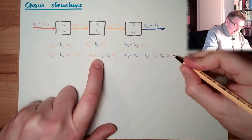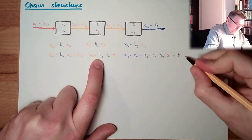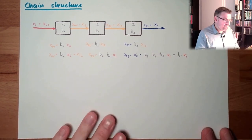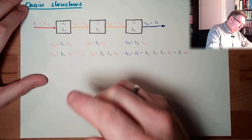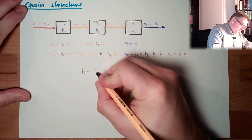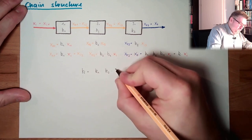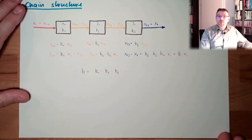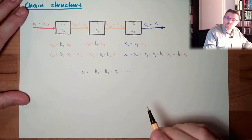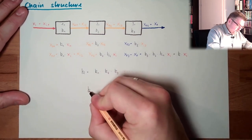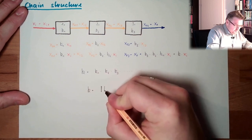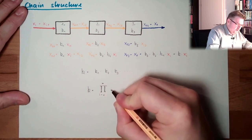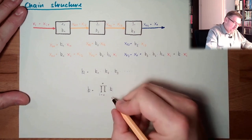This means XO equals K multiplied by Xi. We have a total gain factor K, which is the product of all individual gain factors K1, K2, K3, and so on. If there are more elements in the chain, the total gain factor K is the product from i equals 1 to n of all Ki in the system.